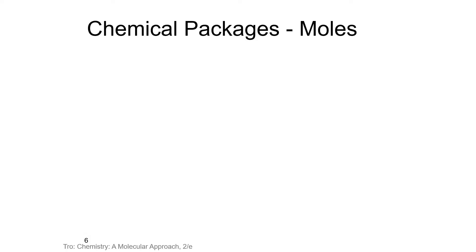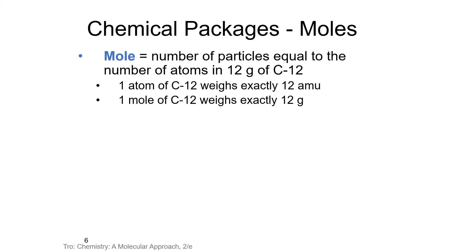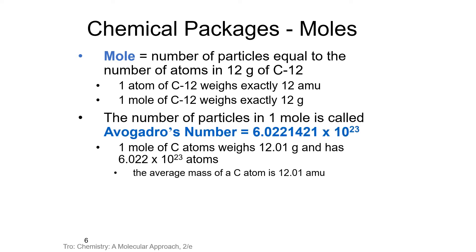You might ask yourself why a mole is 6.022 times 10 to the 23rd — that seems like a weird number. The reason is because we define it as the number of particles in exactly 12 grams of carbon-12. This allows us to say that 12 AMUs of carbon-12 is one atom and 12 grams of carbon-12 is one mole. We call this Avogadro's number, because he was the scientist who first hypothesized and found the amount of one mole.